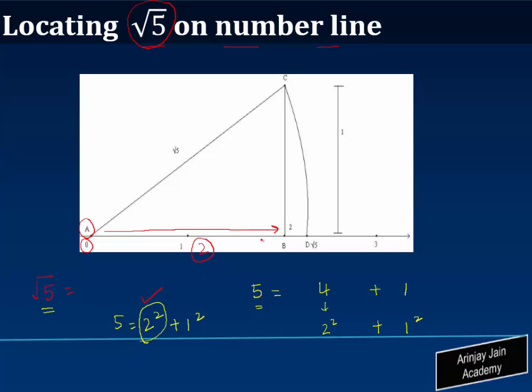At point B we are going to draw a perpendicular to the number line which is this, and the length of this perpendicular is going to be one unit which is expressed over here.